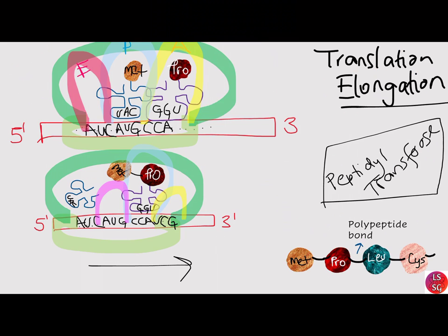The basics of elongation are the same in both prokaryotes and eukaryotes. Once translation has started, the next transfer RNA that matches the next codon sits at the A-site, bringing the appropriate amino acid. A peptide bond forms between the methionine and the new amino acid — in this case, proline. This step transfers the methionine from the first transfer RNA onto the amino acid on the second transfer RNA at the A-site. The formation of the peptide bond is catalyzed by peptidyl transferase, an RNA-based enzyme integrated into the large ribosomal subunit.